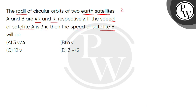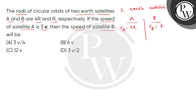So guys, we have two Earth satellites named A and B. We have some data given: satellite A's orbital radius is RA = 4R, and satellite B's orbital radius is RB = R. We have satellite A's velocity VA given, and we need to find satellite B's velocity VB.